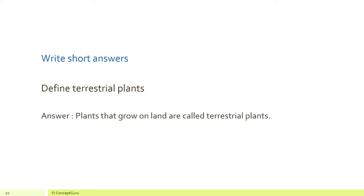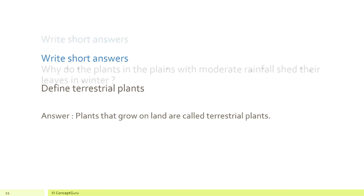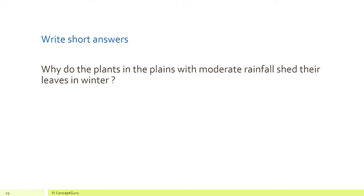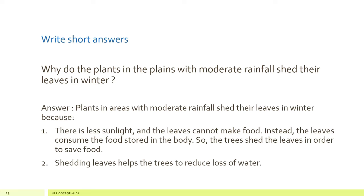Why do the plants in the plains with moderate rainfall shed their leaves in winter? Plants in areas with moderate rainfall shed their leaves in winter because there is less sunlight and the leaves cannot make food. Instead, the leaves consume the food stored in the body, so the trees shed the leaves in order to save food.